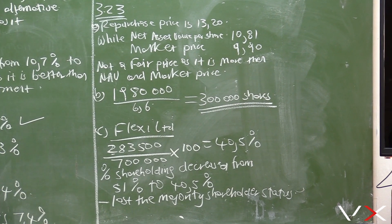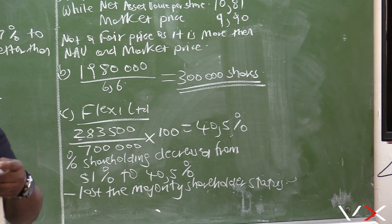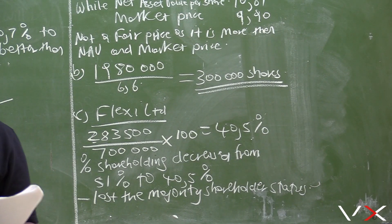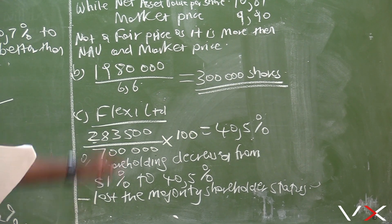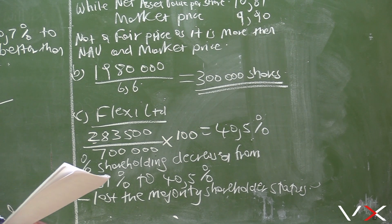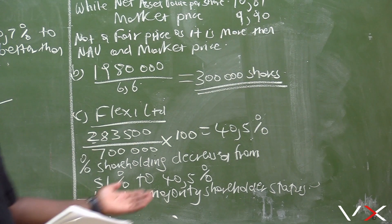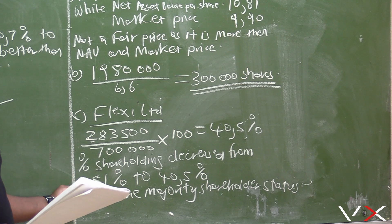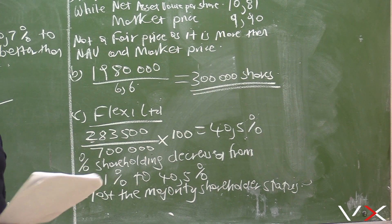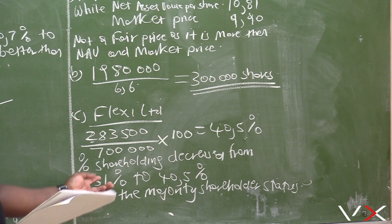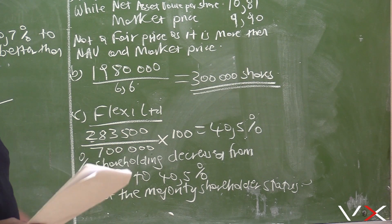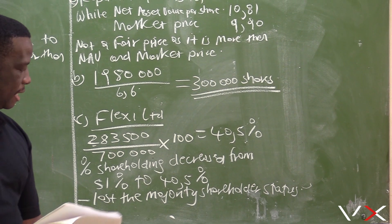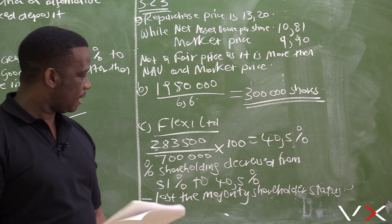Looking at Bob Yates' percentage shareholding in Flexi Ltd: 283,500 shares over 700,000 total shares times 100 equals 40.5%. The percentage shareholding decreased from 51% in 2020 to 40.5% in 2021. Bob was a majority shareholder in this company, but because of the share repurchase, the percentage shareholding dropped to 40.5%, and he lost his majority shareholder status in Flexi Ltd.